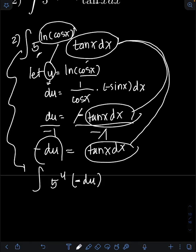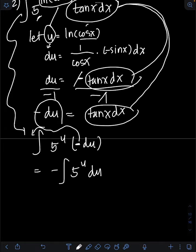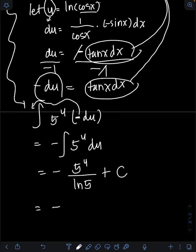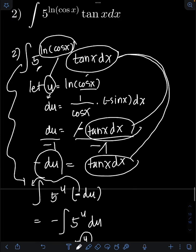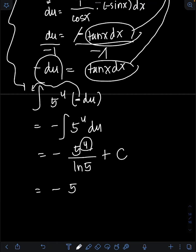The negative is a constant of negative 1, so I put it in front of the integral: negative integral of 5 raised to u du. Applying the formula, this equals negative 5 raised to u over ln 5 plus c. Transforming back, u equals ln cos x, so the final answer is negative 5 raised to ln of cos x over ln 5 plus c.